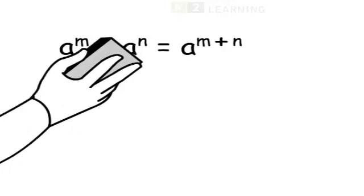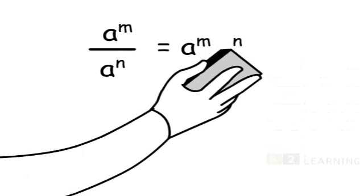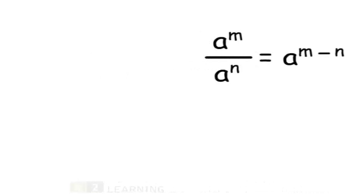What you can see on the screen now is the simplified expression for a product as we had seen earlier. Now, instead of a product, if you had a quotient, the simplified expression would be A raised to m minus n. It is as simple as that. As always, let us try out an example.